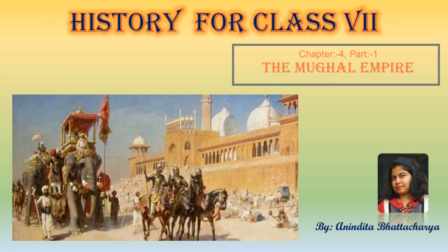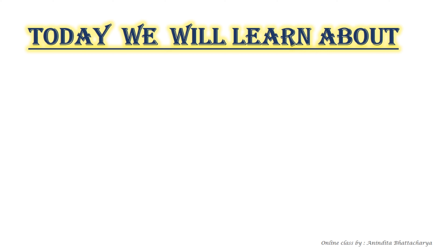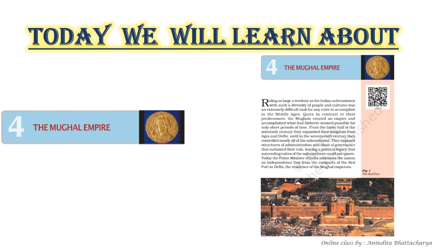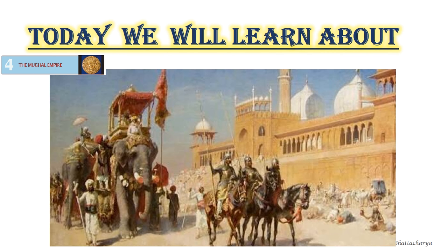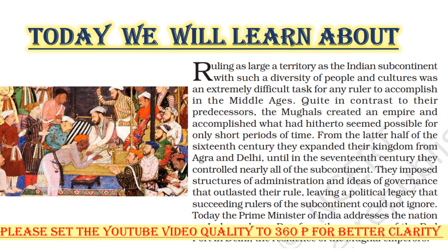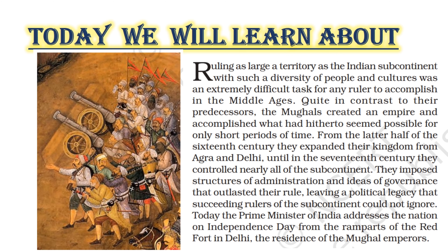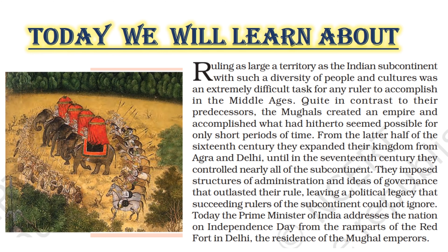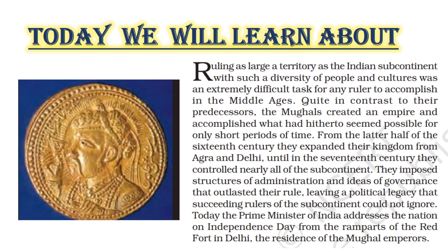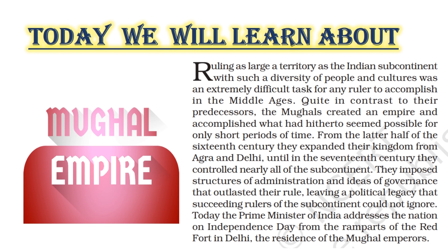Welcome to today's SST class. We will start Chapter 4: The Mughal Empire. The Mughal period is described as the early modern period because this era witnessed major changes in trade, agriculture, and technology. For instance, with the creation of more sea routes and expansion in trade, currency came to be used increasingly. These changes were supported by a stable, centralized empire.